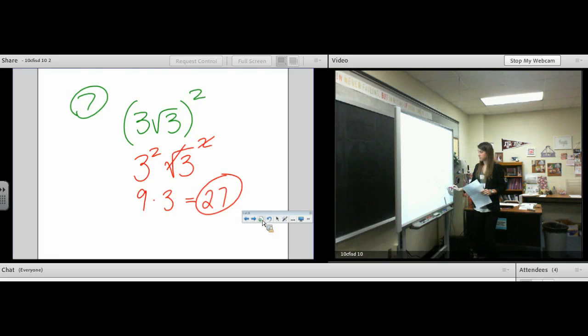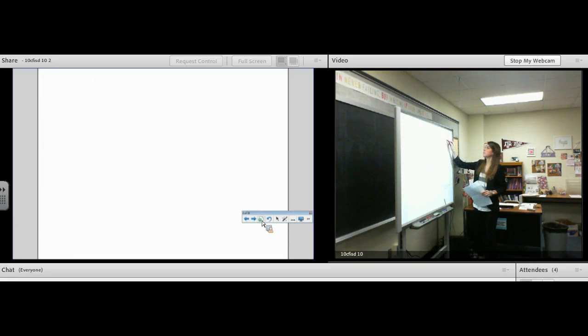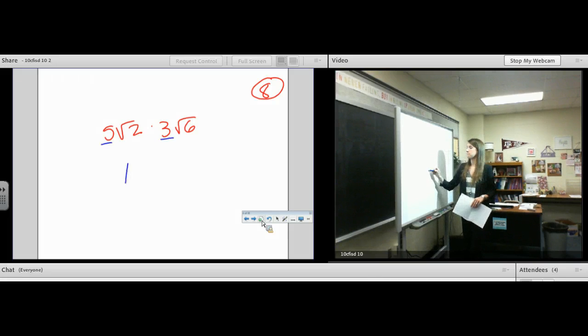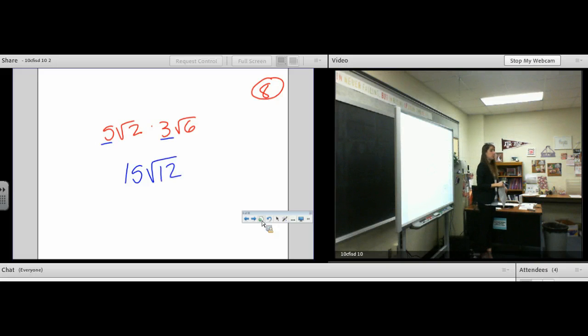Number 8. How many questions is this? 10. Number 8: 5√2 times 3√6. We had this in our warm-up yesterday. We learned on Monday that you can multiply the numbers outside separate from the numbers inside. 5 times 3, 2 times 6. That is not a good answer to put, because that's not simplified. You're not done. Don't submit that answer. It's not finished.